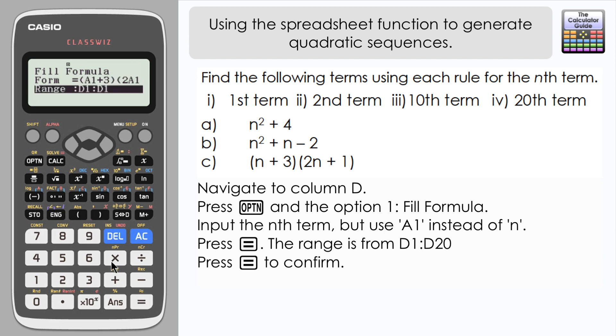Press equals to confirm, and then we want to go from cell D1 and again to cell D20. So let's just change that, press equals and then equals to confirm.